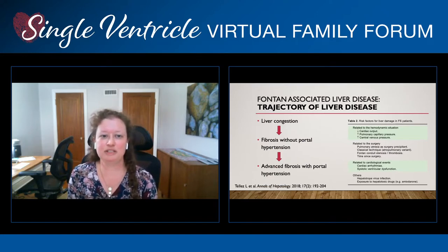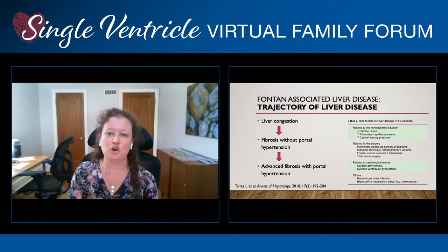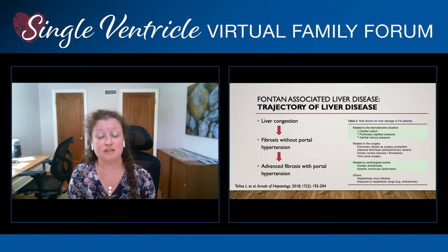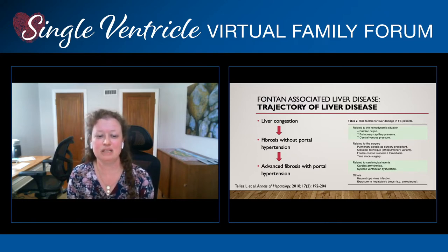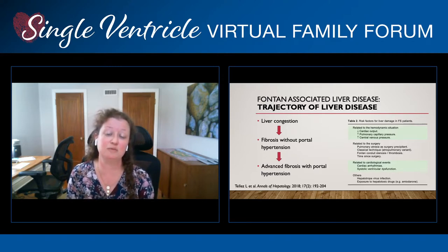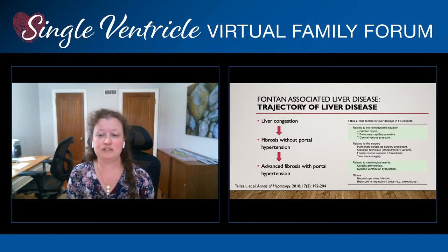The typical trajectory of liver disease in Fontan physiology is that you develop liver congestion and altered blood flow, and over time fibrosis develops without portal hypertension — you wouldn't even know the fibrosis is developing except for some subtle findings on labs, imaging, and physical exam. Then lastly you develop advanced fibrosis with portal hypertension, and you'll have clearer signs on labs, imaging, and physical exam when you see your physician.